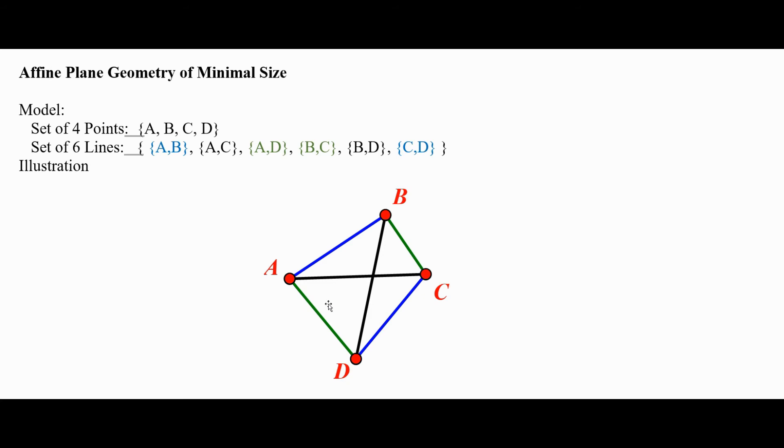Notice that we have three pairs of parallel lines. In the model here, the way I've got them colored, A, B and C, D do not intersect. The blue lines are the blue sets up here. The green lines are also parallel, the green sets up here have an empty intersection. And the black ones don't intersect either, B, D and A, C don't intersect.